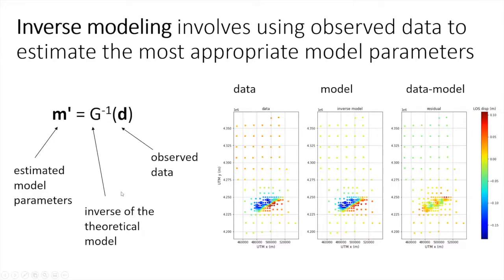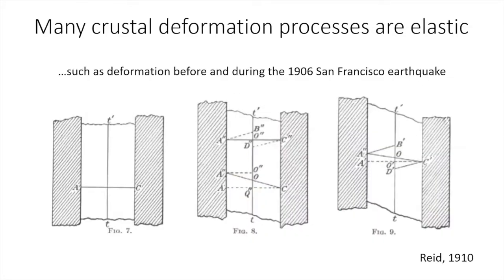I'm going to focus only on elastic models because most deformation processes in the earth's crust are elastic deformation processes. We've known since the early 20th century — since the 1906 San Francisco earthquake — that the crust behaves like an elastic solid. This was identified by Harry Fielding Reid, who looked at triangulation survey data from before and after the 1906 earthquake.